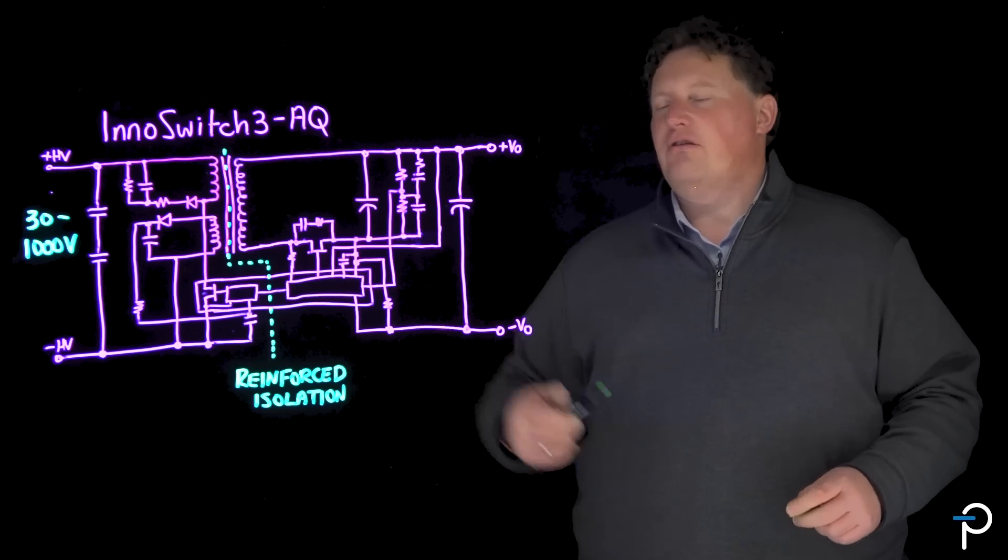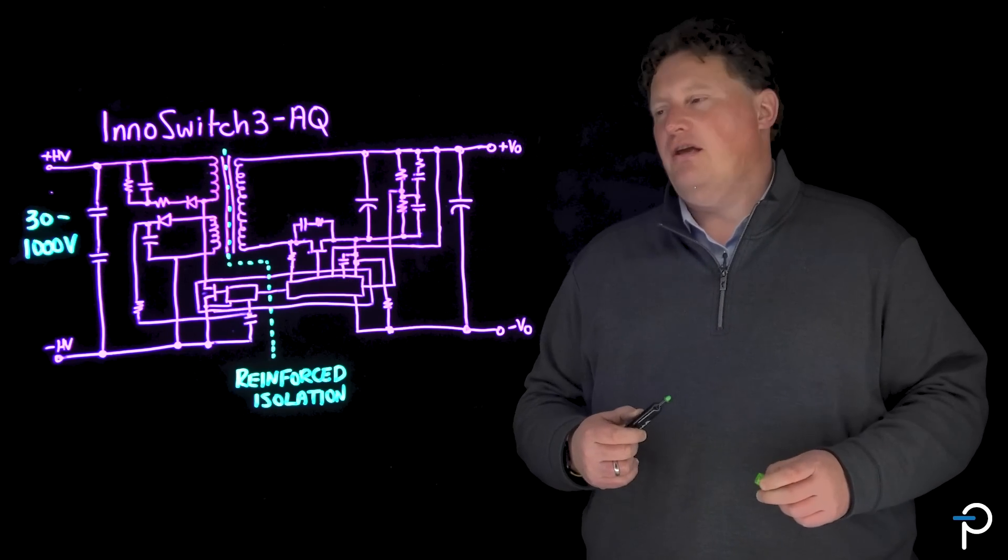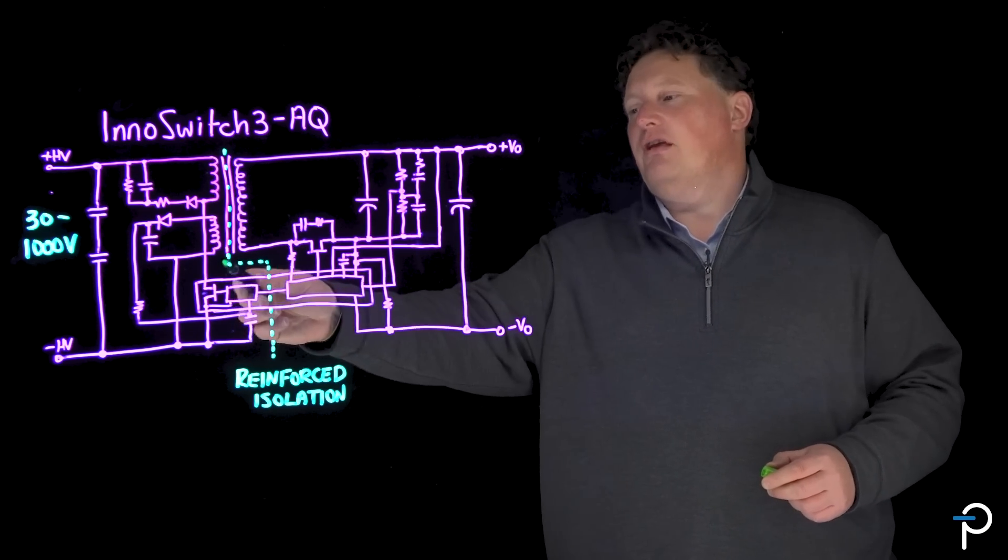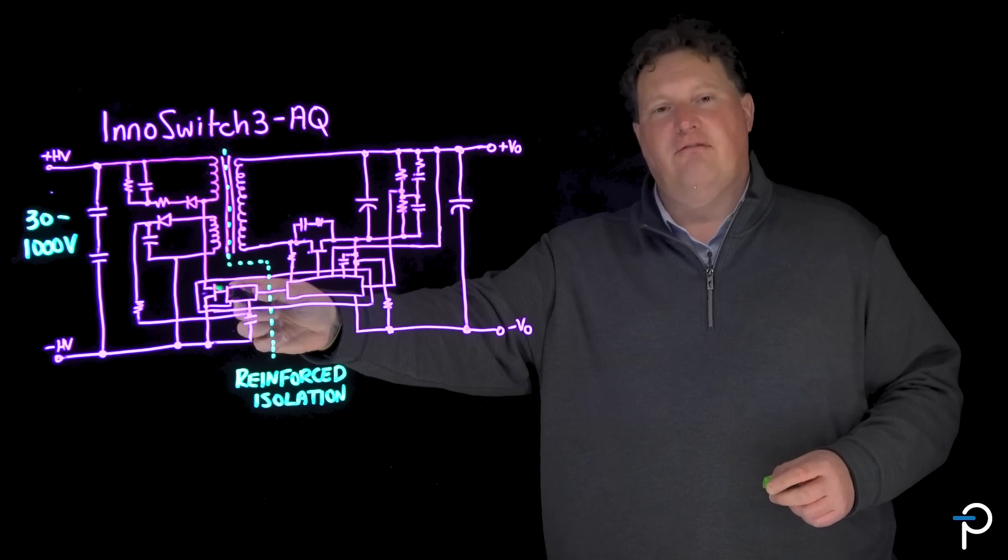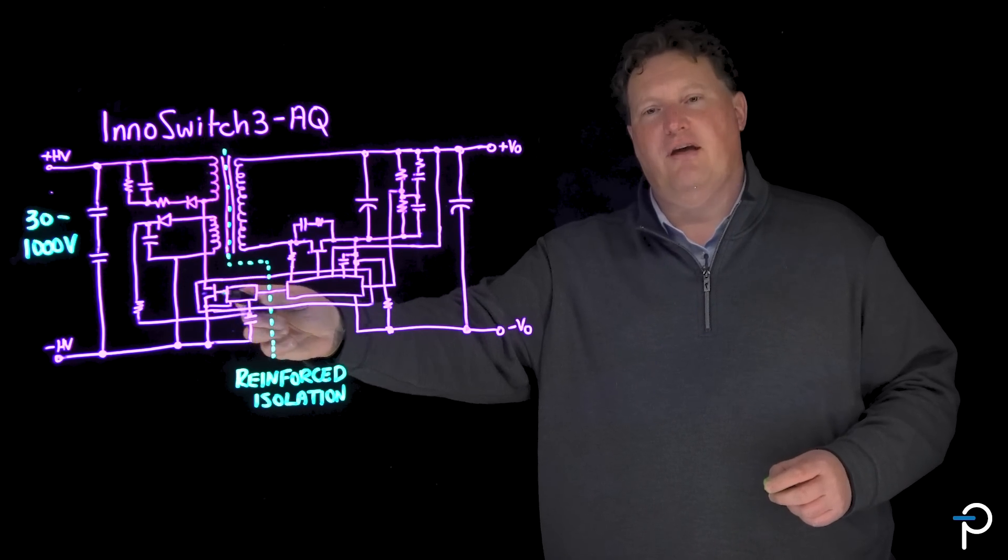What I've drawn here is a schematic using InnoSwitch3-AQ, but what makes the new parts so unique is the 1700 volt rating of the internal SiC MOSFET.